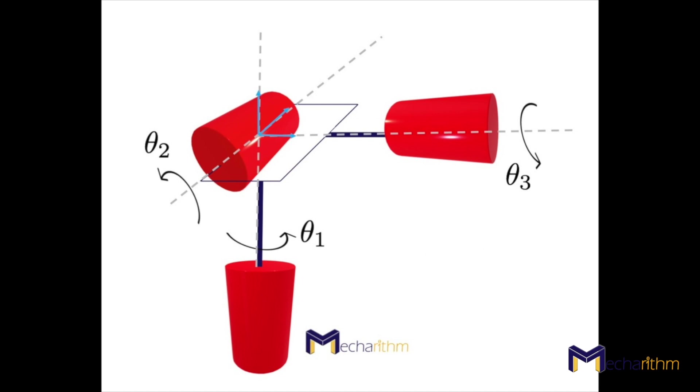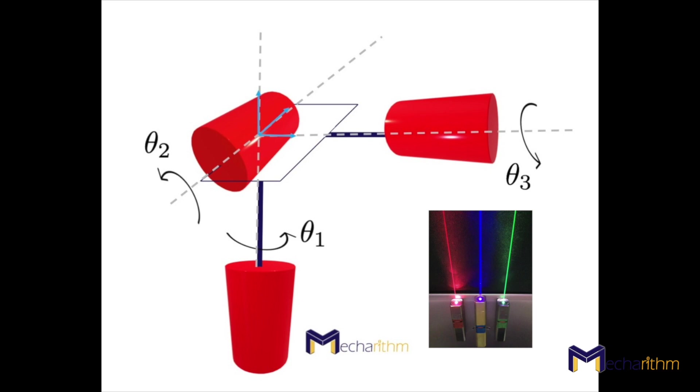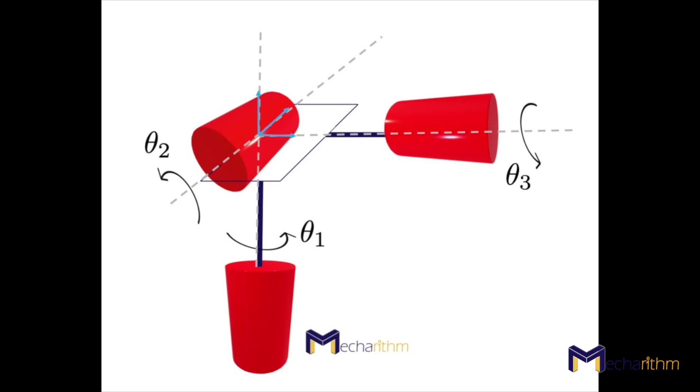The task space depends on the task. For example, if we define the task to be pointing a laser pointer, then rotations about the axis of the laser are not necessary and important, and the task space can be defined as the set of directions that the laser can point.